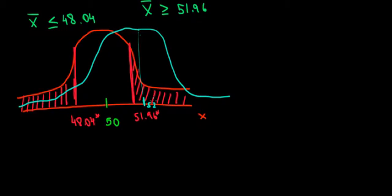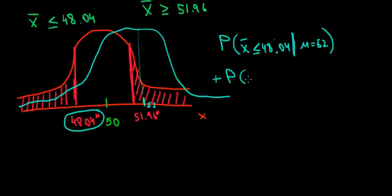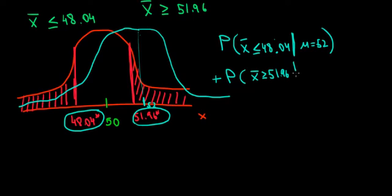Now what is the power in this case? Recall this is the probability of finding a value in the rejection region which is less than 48.04. So the sample mean must be less than 48.04, given that the actual mean of the population is 52. Besides that, we also need the probability of having the sample mean greater than or equal to 51.96, given that the mean of the population is actually 52 grams.